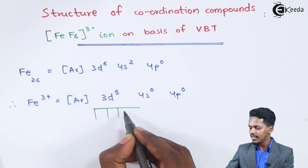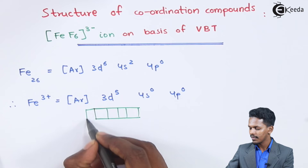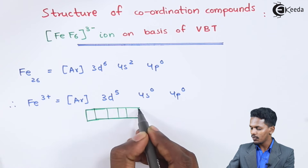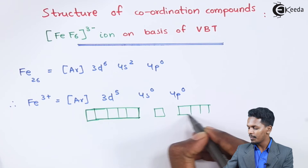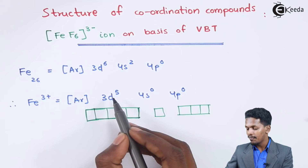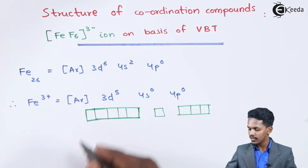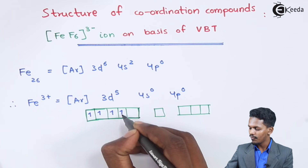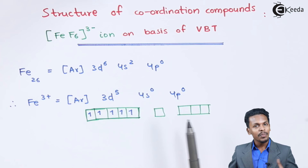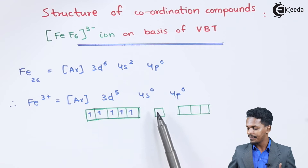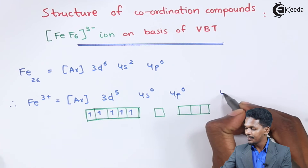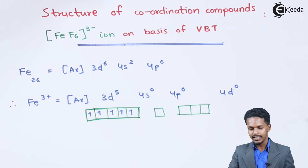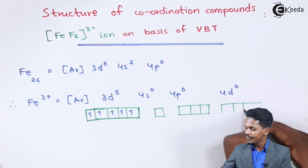Looking at the orbitals: we have the d orbitals, the s orbital, and the 3p orbitals. There are 5 electrons in the d orbital, filling positions 1 through 5, leaving empty 4s and 3p orbitals. We can also note 4d⁰, giving us multiple empty orbitals available.